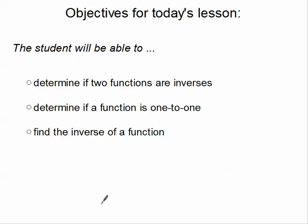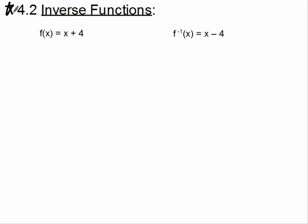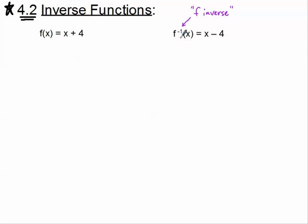Welcome to the final installment of tutorials for this chapter — a little bit of 2, 3, and 4. This first tutorial, we are going to be able to determine if two functions are inverses. We are in section 4.2 in the textbook. I have here two functions: f(x) = x + 4, and the second one, labeled with the inverse symbol, is f⁻¹(x) = x − 4.